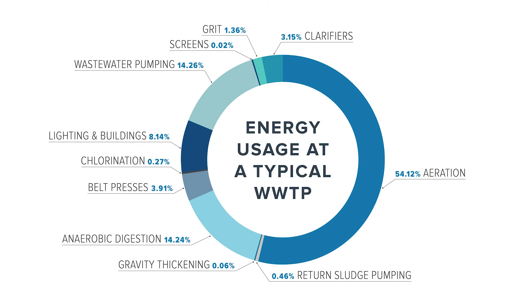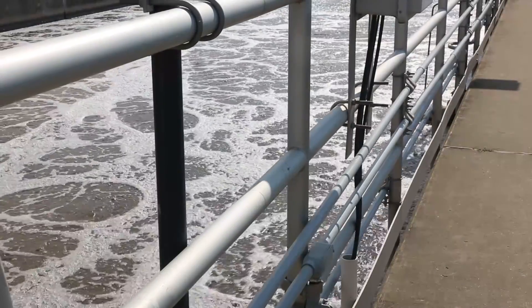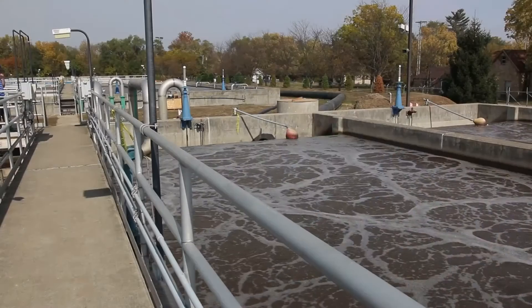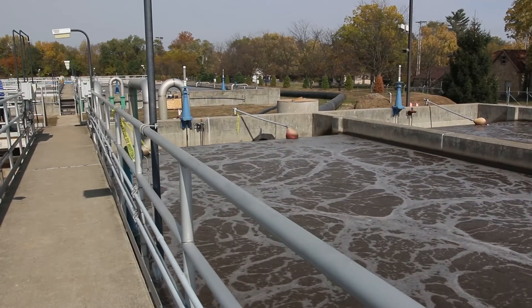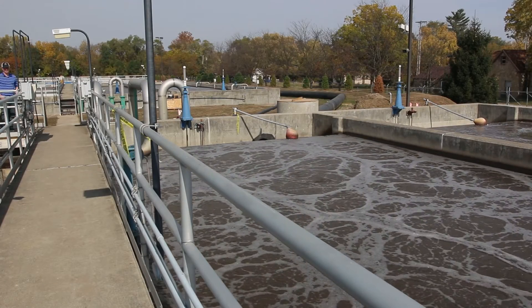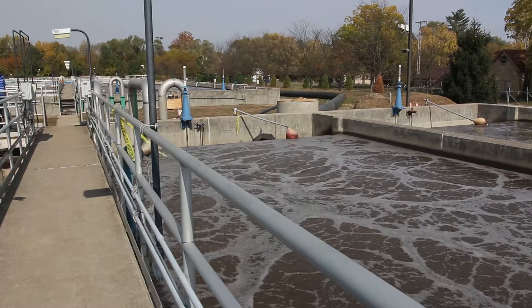At a typical wastewater treatment plant, the aeration process consumes over 50% of the energy used at the plant. This is due to the blowers being operated with a higher aeration output than necessary to achieve the permitted ammonium effluent limits. Online nutrient monitoring can help reduce the amount of wasted energy.